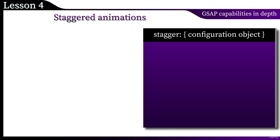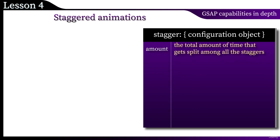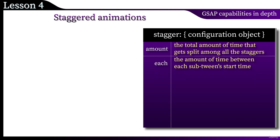When setting up a configuration object, we can take advantage of the following properties. Amount is a numeric value — this is the total amount of time in seconds that gets split among all the stages. Another alternative is the each property: the amount of time in seconds between each sub-tween's start time.